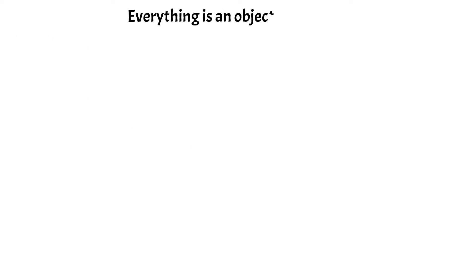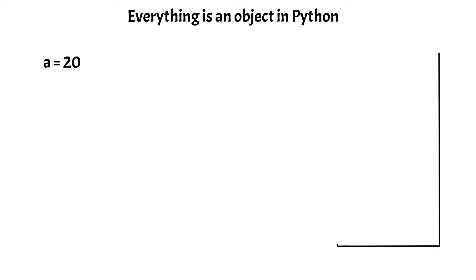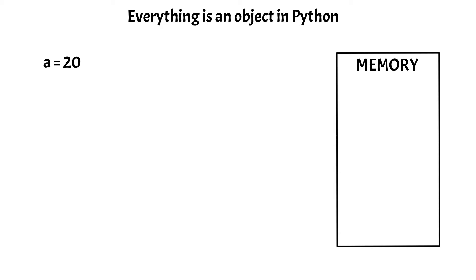In Python, everything is an object. Which means when we create a variable A and assign a value of 20 to the variable, then the value 20 is stored in the memory as an integer object, and the value in the memory will be assigned to a variable called A.